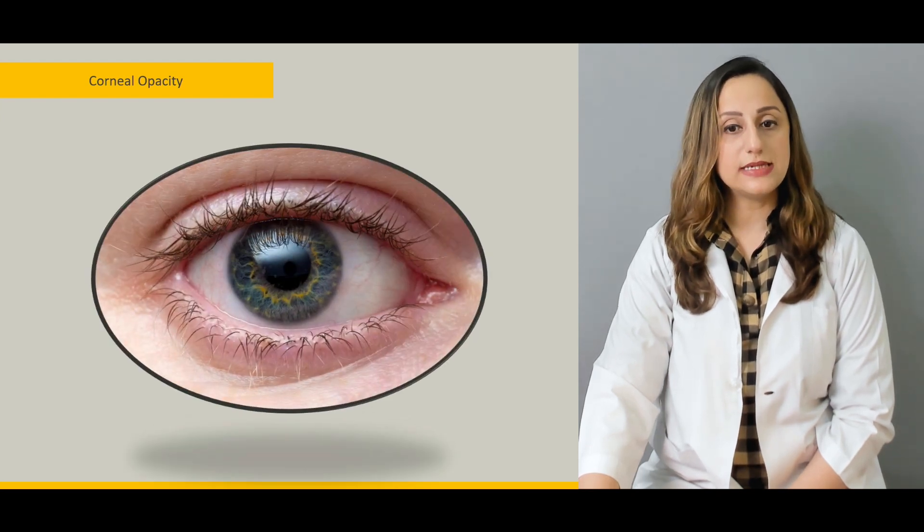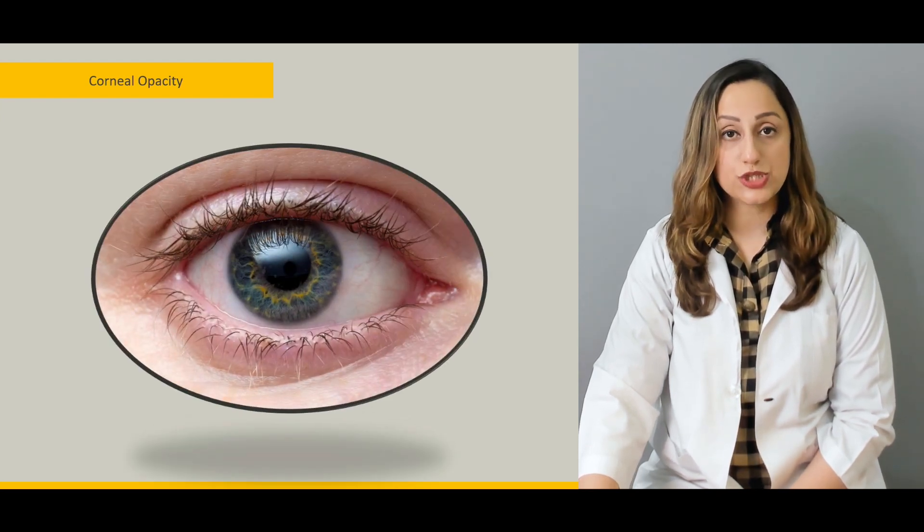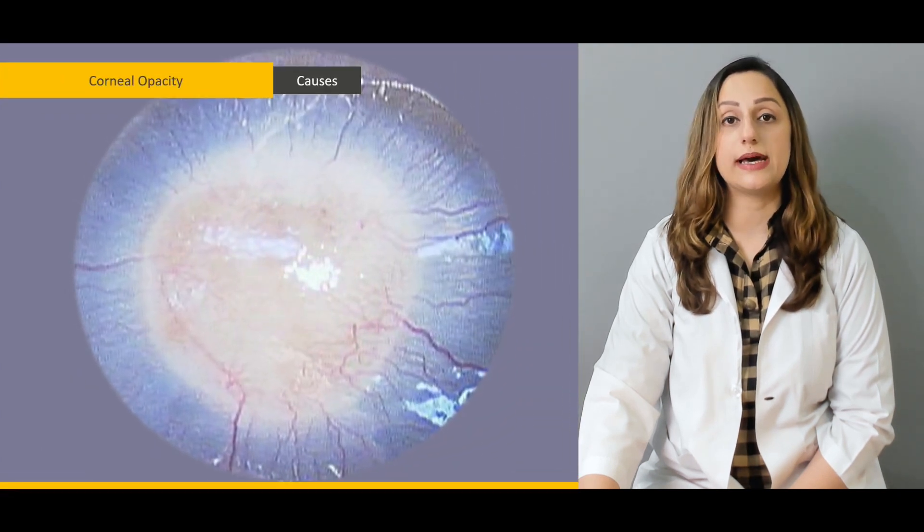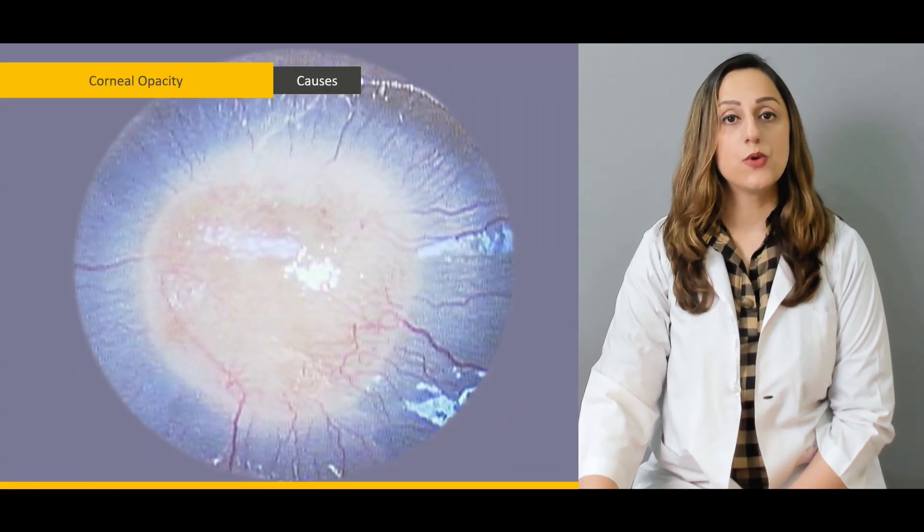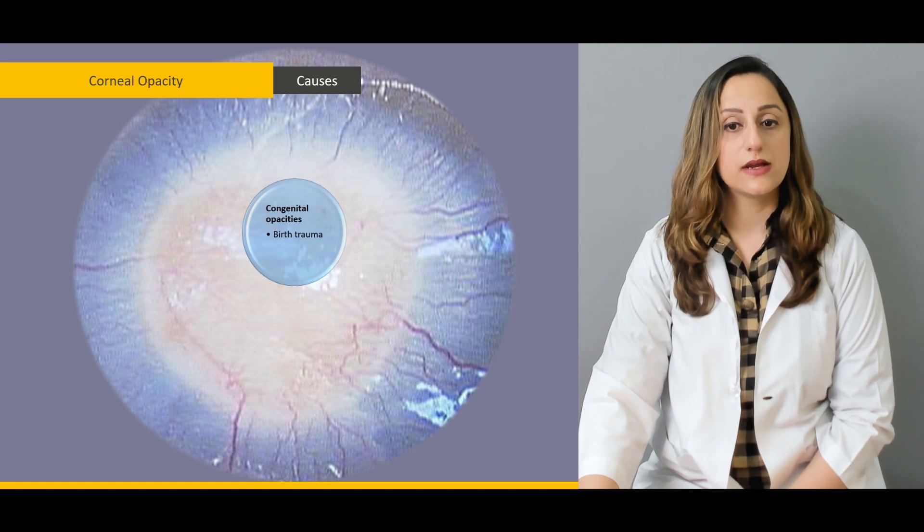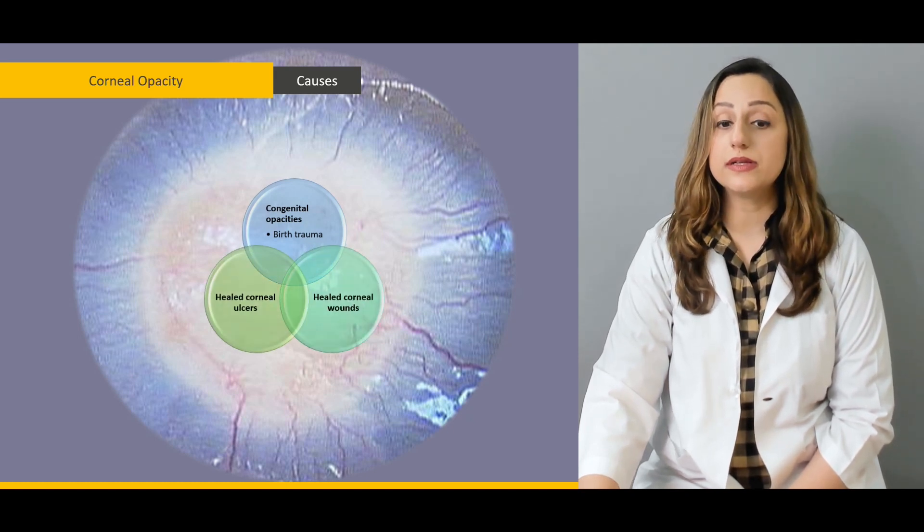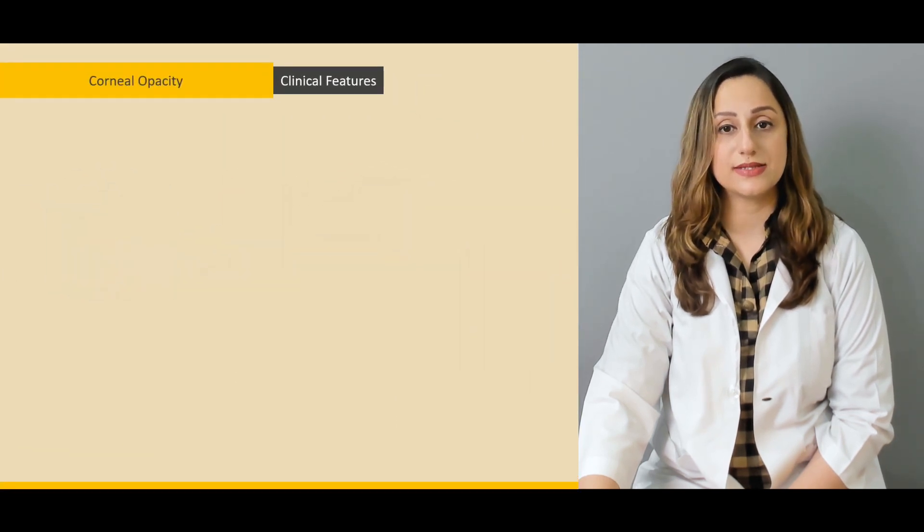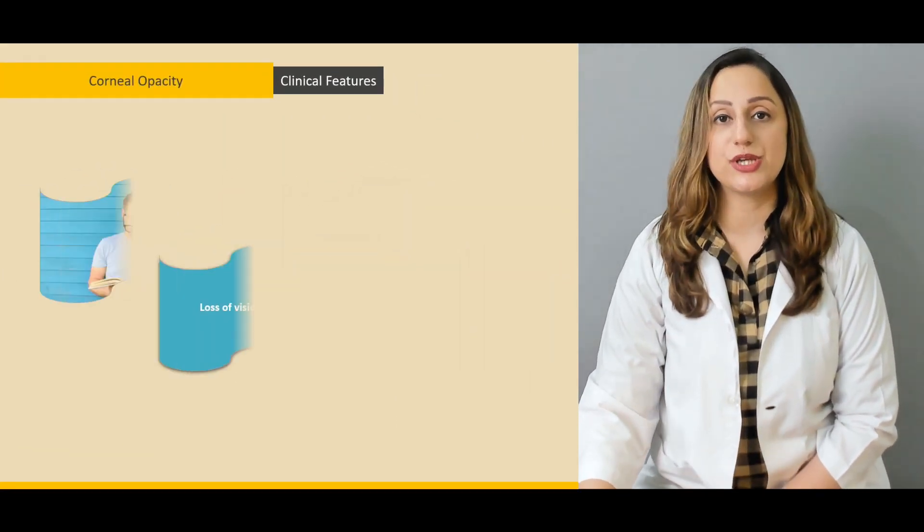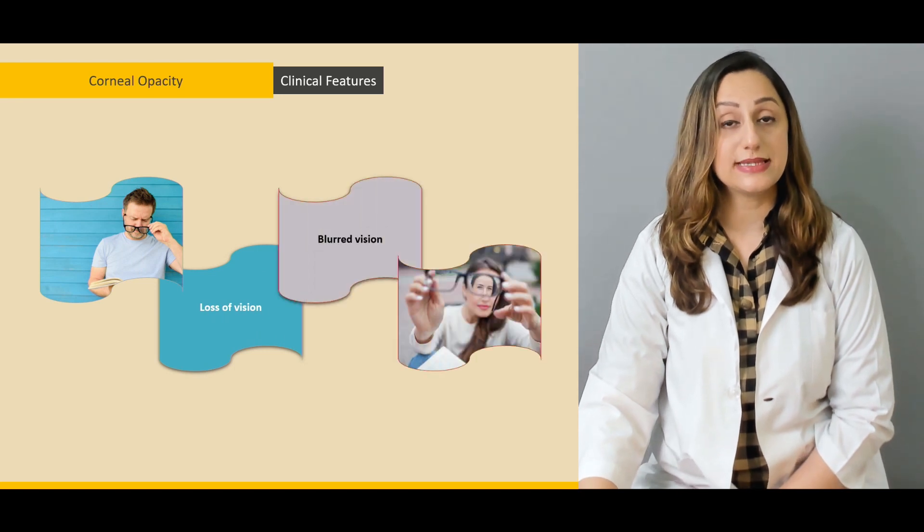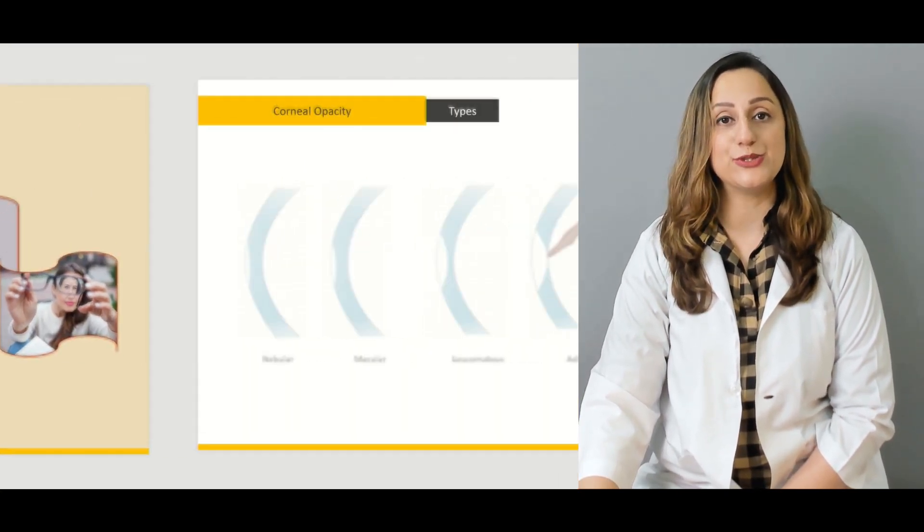Corneal opacities are sometimes seen which can be part and parcel of degenerative as well as dystrophic conditions. What are the causes of these corneal opacities? Either it can be congenital, healed corneal wounds, or healed corneal ulcers. The clinical features relating to corneal opacities are basically loss of vision and blurred vision.